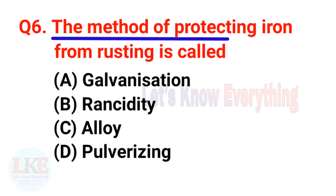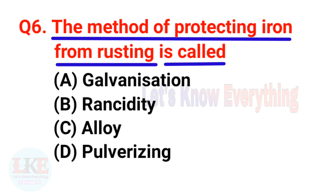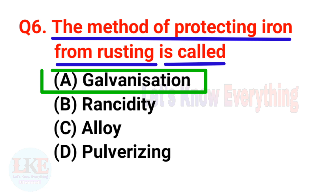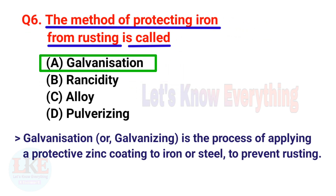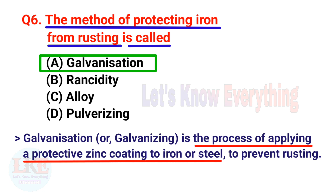Question 6: The method of protecting iron from rusting is called galvanization. Galvanization or galvanizing is the process of applying a protective zinc coating to iron or steel to prevent rusting.